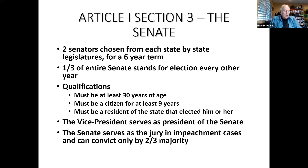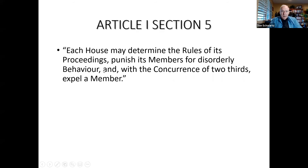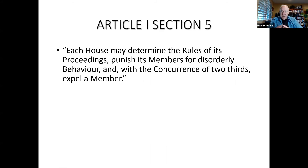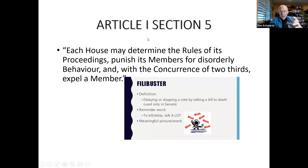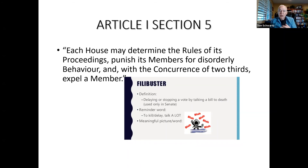Article I, Section 4 calls for Congress to meet at least once a year. Section 5 says each house may determine the rules of its proceedings, punish members for disorderly behavior, and with a two-thirds vote, expel a member. One rule the Senate adopted is the filibuster — a way to delay or stop a vote by talking a bill to death. The Senate adopted the filibuster in 1805, and in 1917 ruled that 60 senators could vote to end the filibuster, called cloture.